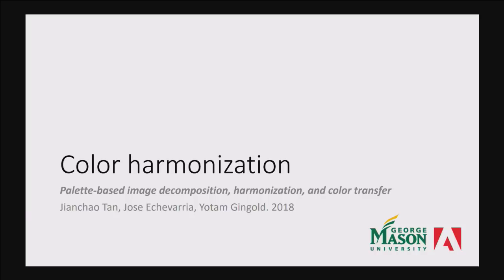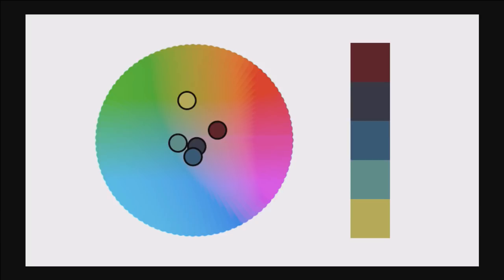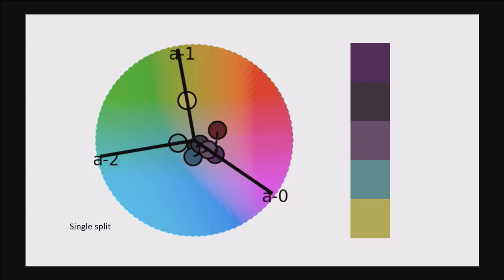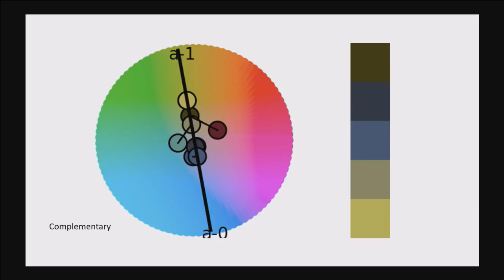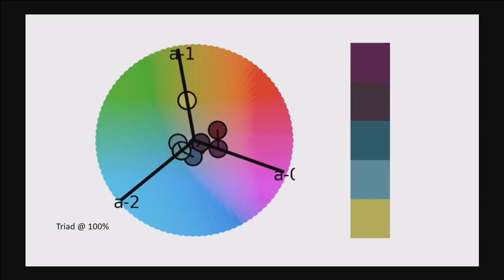I'm going to go through different projects we've been working on. For the first project, I'll talk about color harmonization work done with university collaborators. The idea is that instead of starting from scratch, maybe you've already collected a color theme from different images. When you visualize it over the color wheel, we analyze the distribution and see if we can improve it using harmonic schemes — making them snap into a split complementary, complementary, monochrome, square, or triad. Maybe the algorithms don't capture your full intent, so we allow refinement as well.